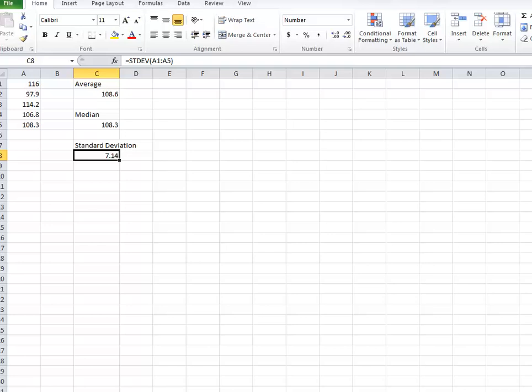Here we have a set of data: 116, 97.9, 114, 106, 108, and we have already calculated the average, we've calculated the median, which was the middle number of the set, and then we've calculated standard deviation.